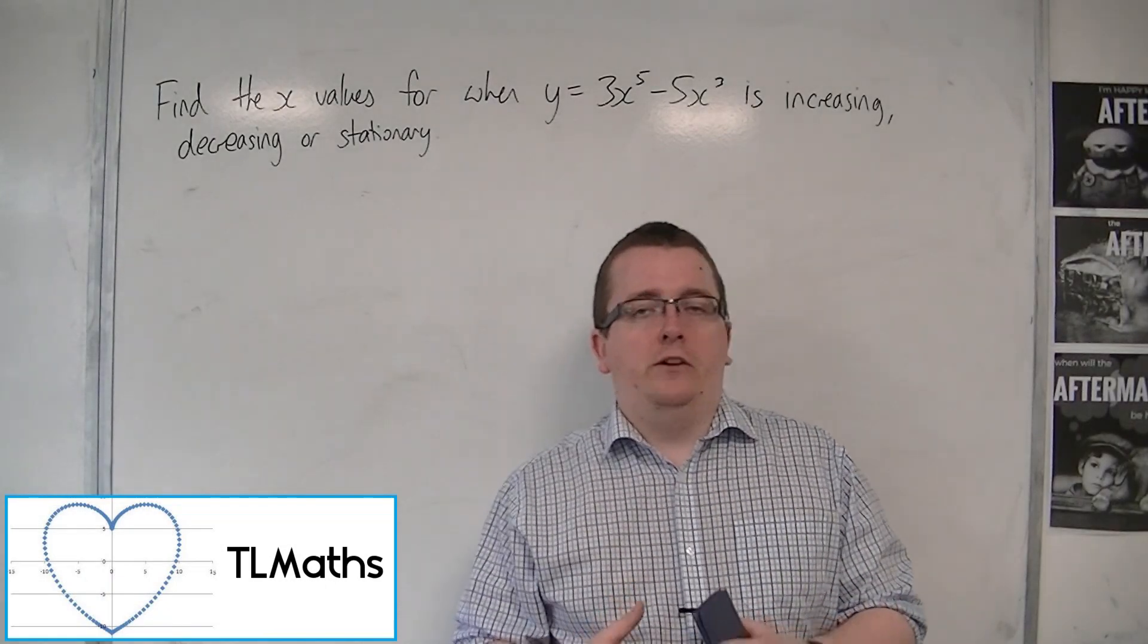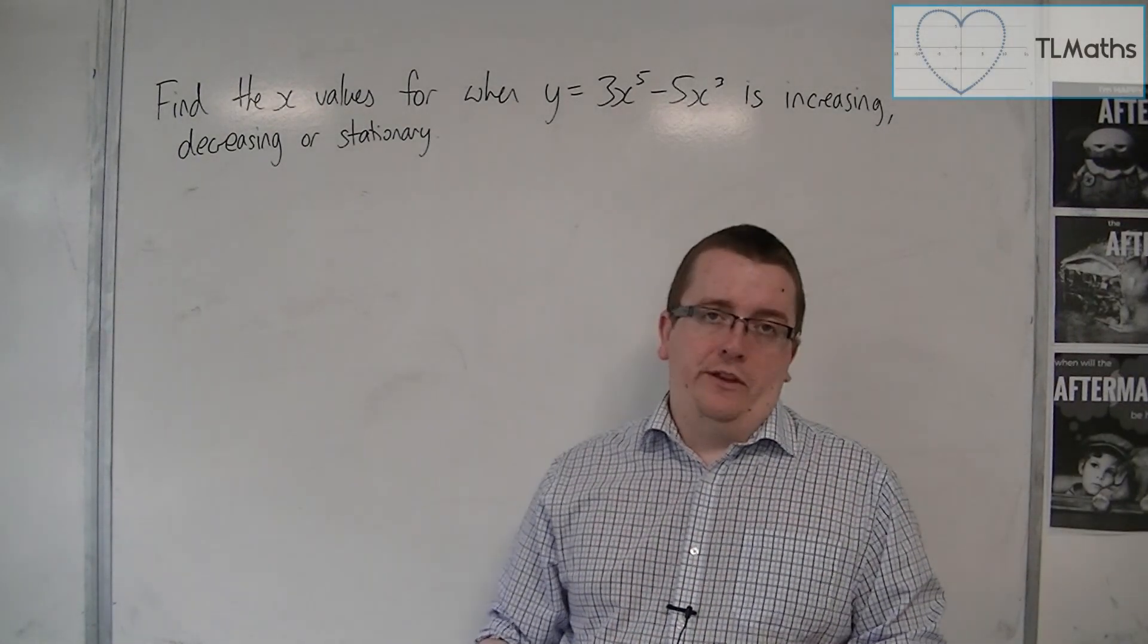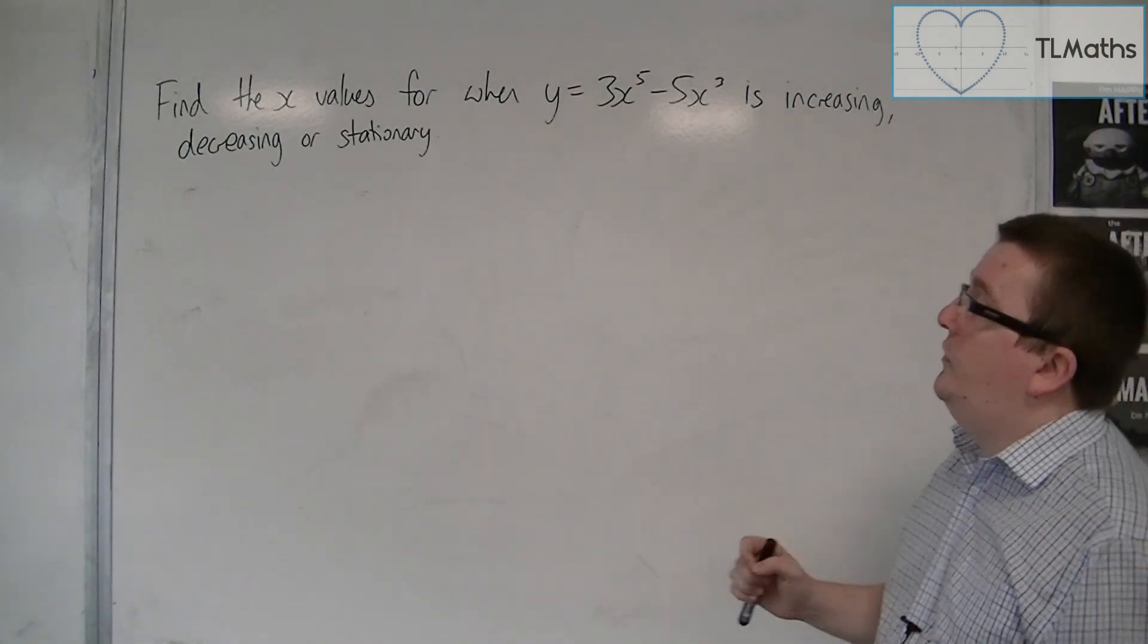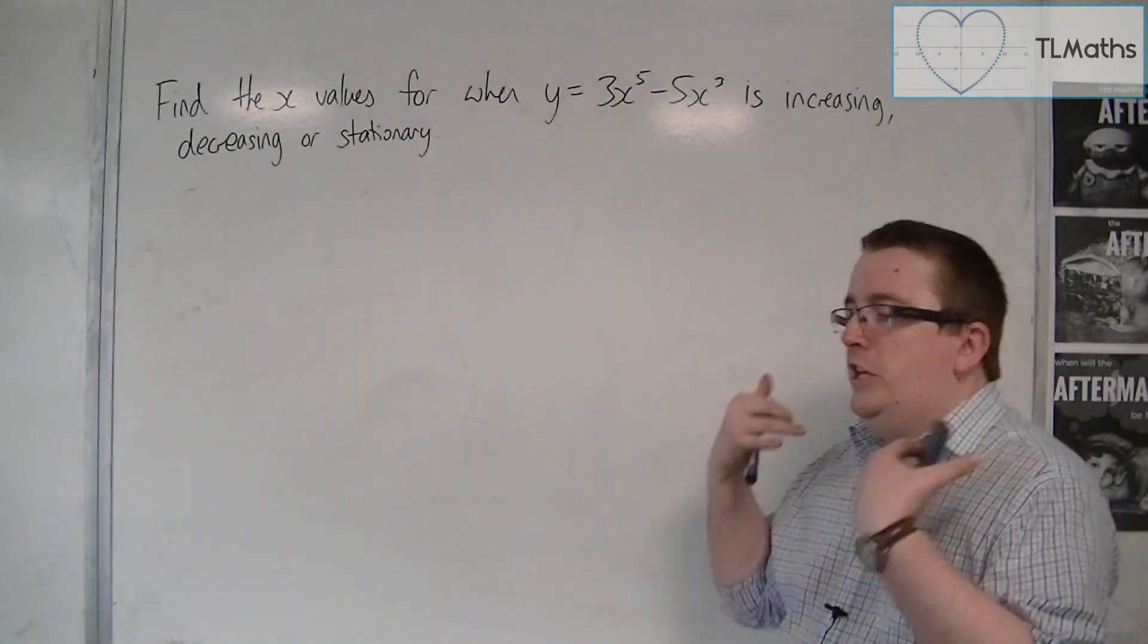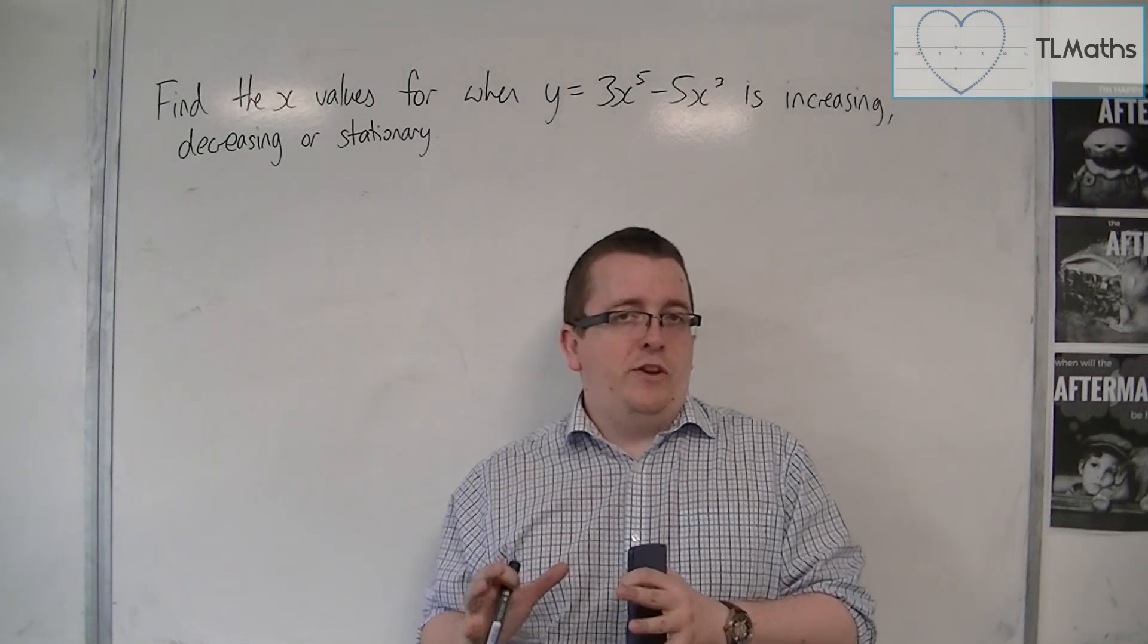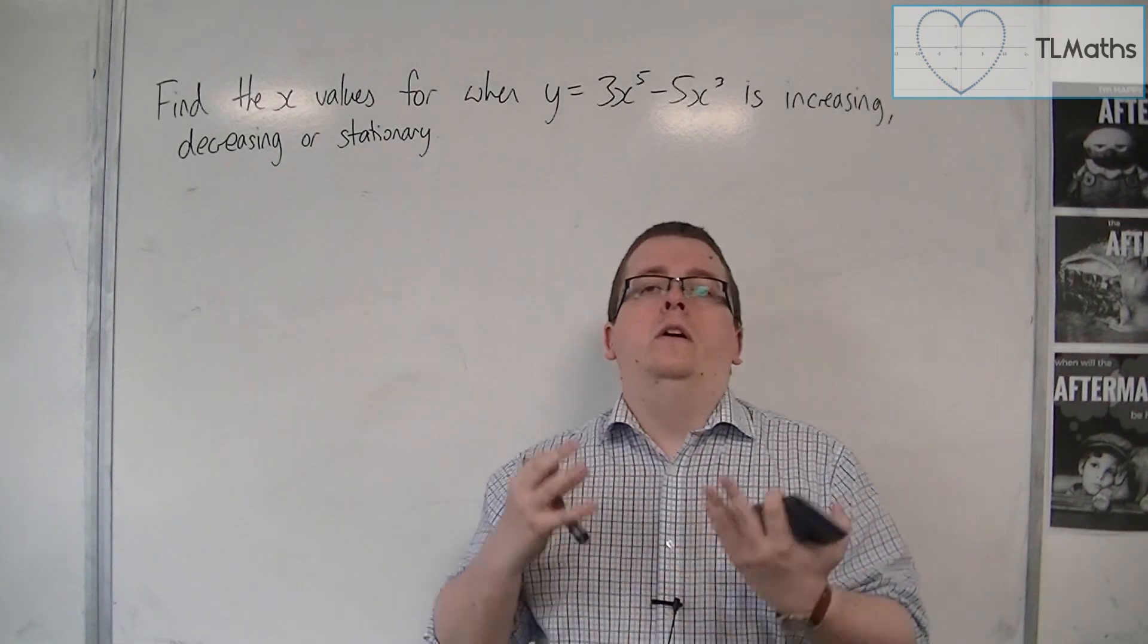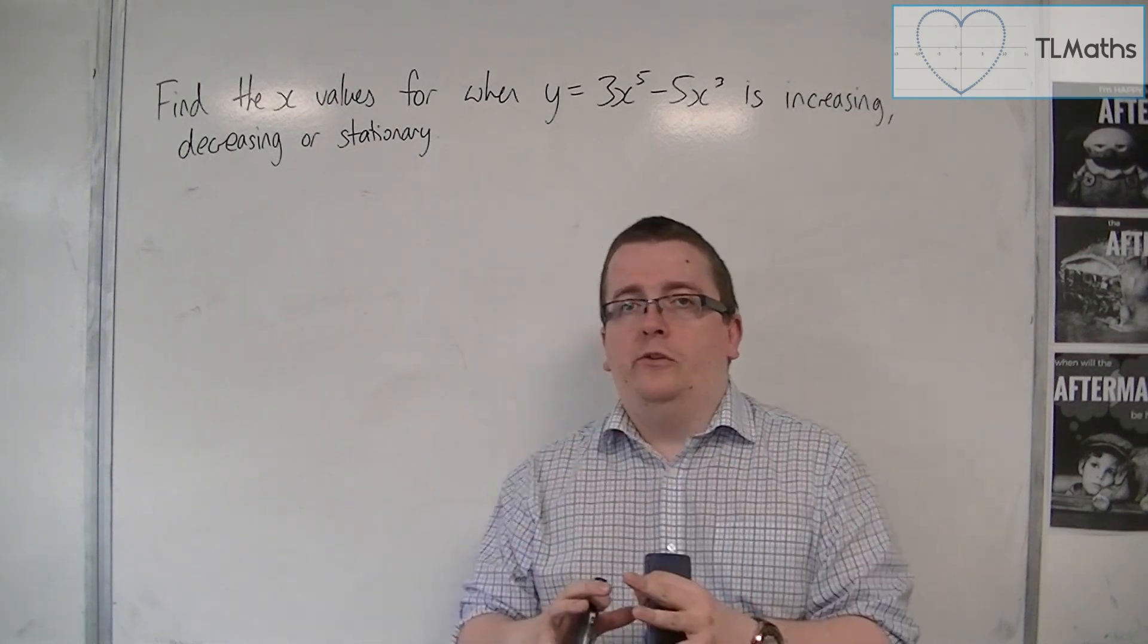So what I want to show you in this video is a bringing together of all the skills that we've learnt so far in this section to try and find the x values for when y equals 3x to the 5 minus 5x cubed is increasing, decreasing or stationary. And we're going to use those skills to see if we can figure out what this curve would look like. It's got an interesting shape. Now I'm not saying that this type of curve you'll be asked to sketch in the exam, but I want to show you that we have all the necessary skills in order to do it.